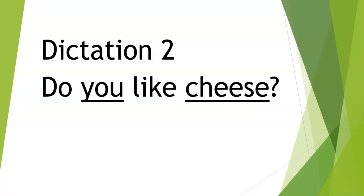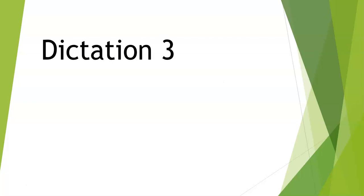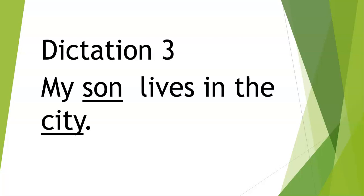Let's go to dictation number three. My son lives in the city. So here we've got son — your son is a person — and city is a place. So this is a person and a place, so they are nouns. That's why we underline these.